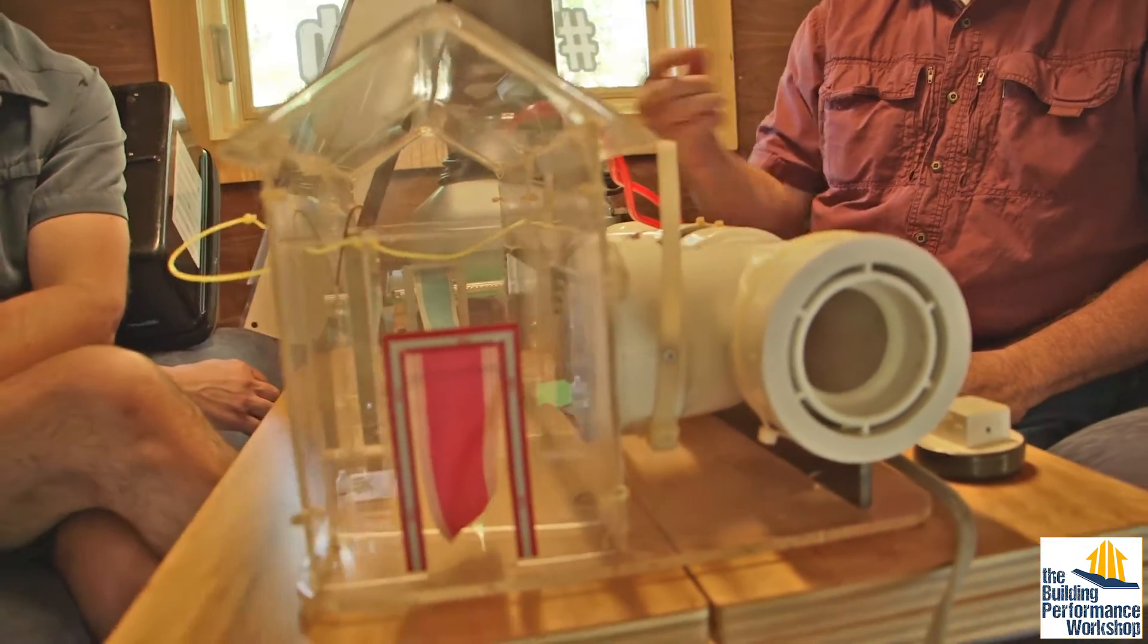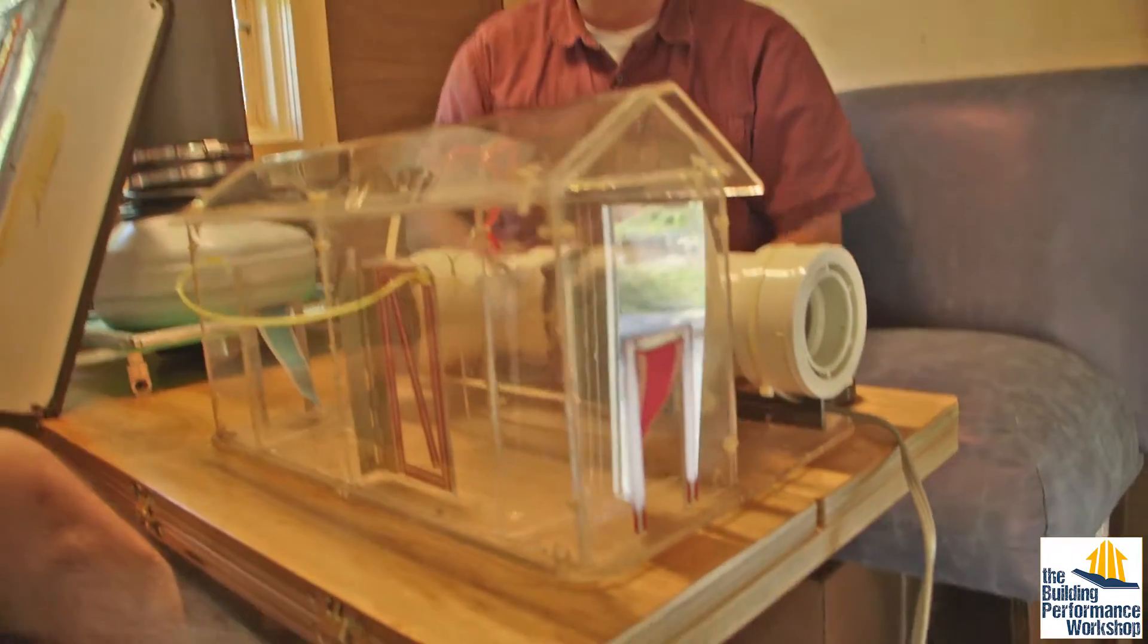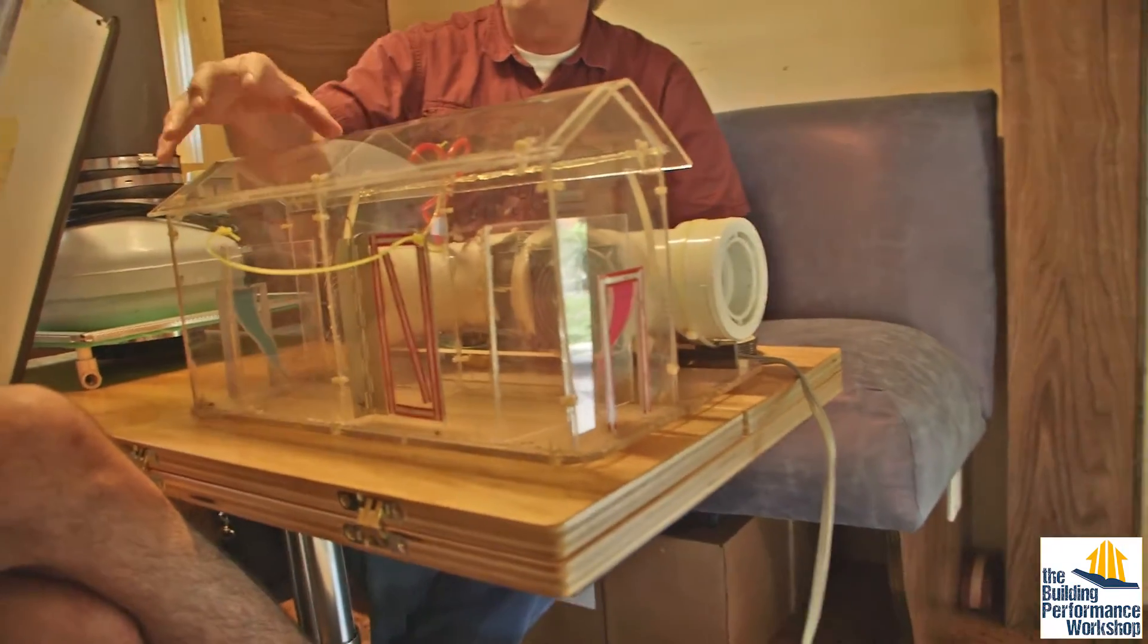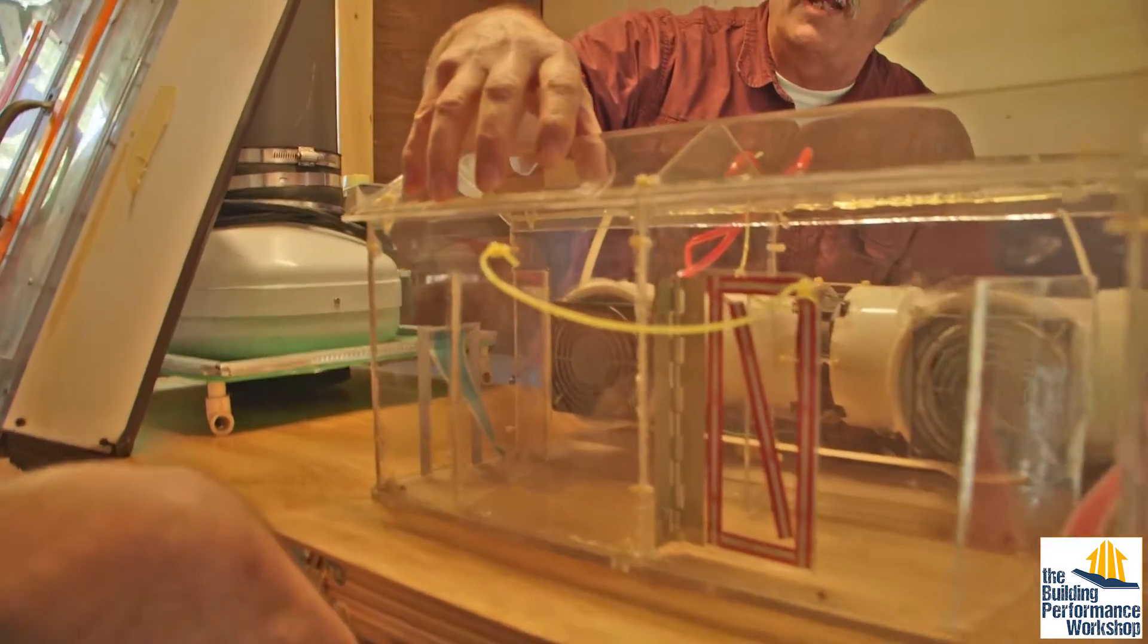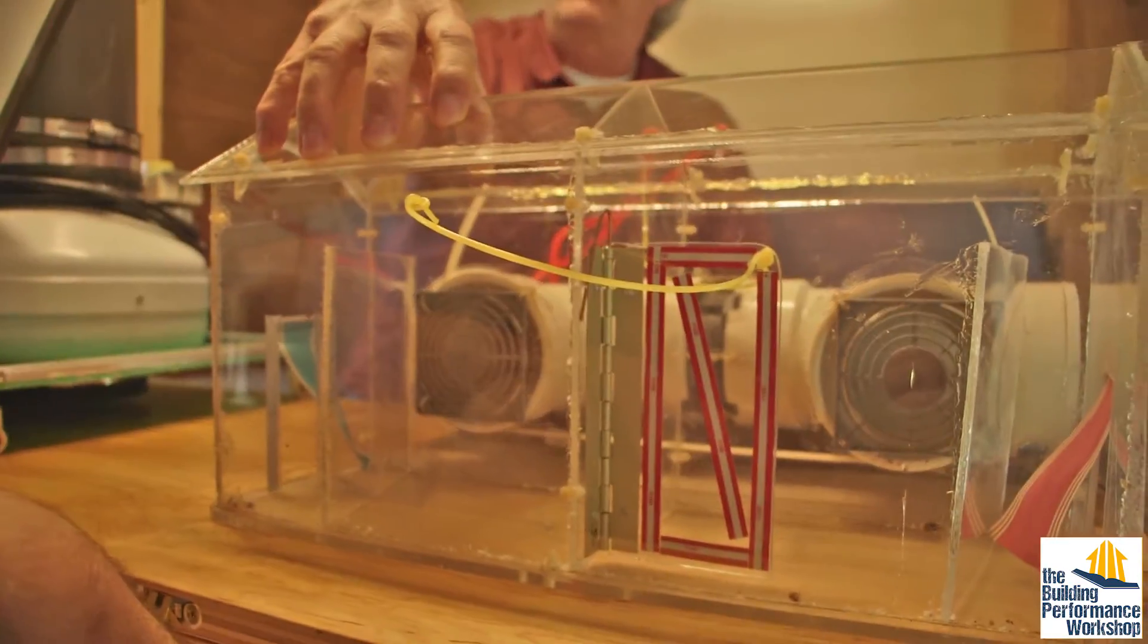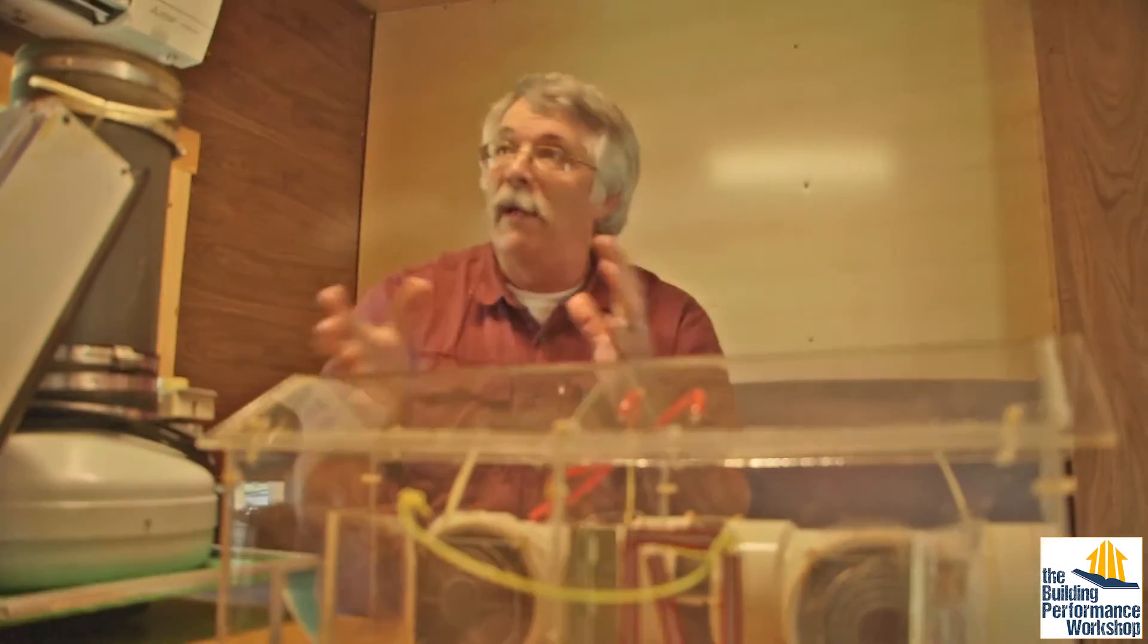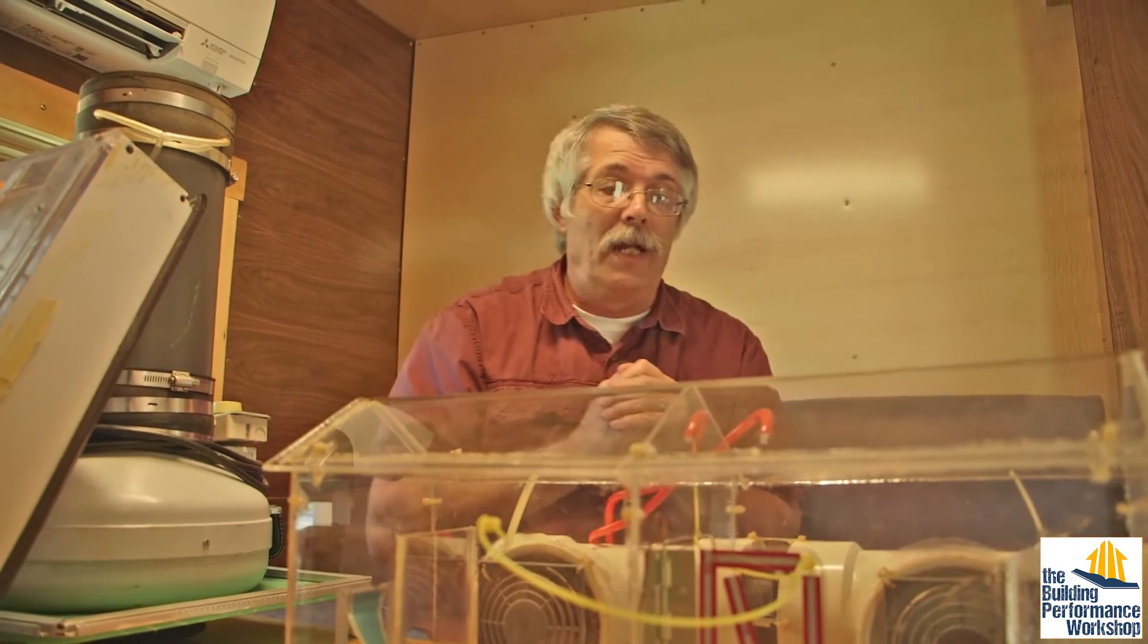The impact on the house is now the house is running negative. So any crack, crevice, or hole existing in this building is now pulling in outside air. Well, imagine if you have a vented combustion appliance inside this building, like a gas water heater, for example. Now that vent pipe is acting as an air intake, and that may not be the best thing to have happen.